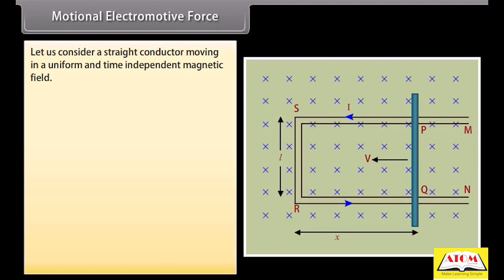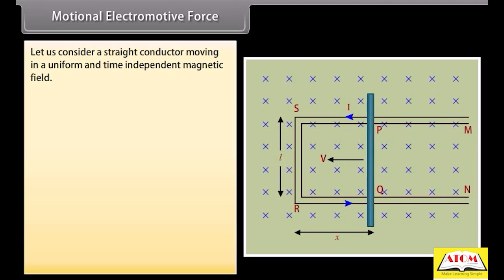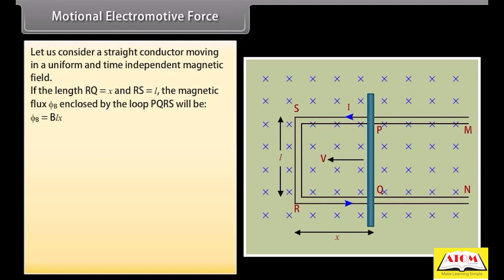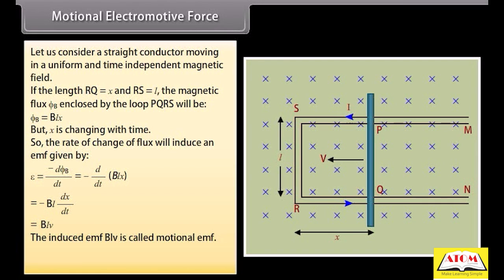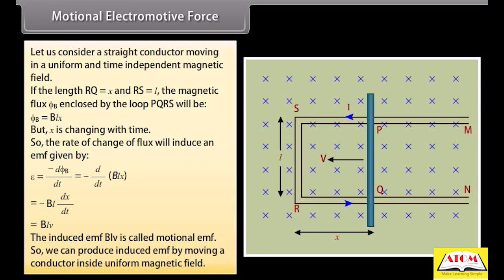Consider a straight conductor moving in a uniform, time-independent magnetic field. Let a rectangular conductor PQRS have the conductor PQ free to move, moved with constant velocity V in a uniform magnetic field B perpendicular to the plane of the system. If RQ is X and RS is L, the magnetic flux enclosed by loop PQRS is phi_B = BLX. Since X changes with time, the rate of change of flux induces an EMF given by minus d(BLX)/dt, which equals BLV. This induced EMF BLV is called Motional EMF.